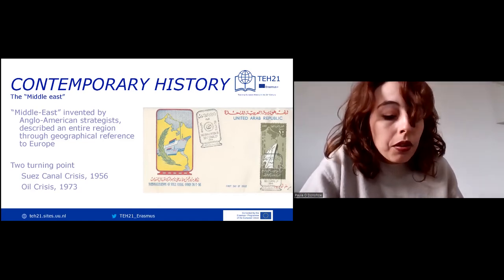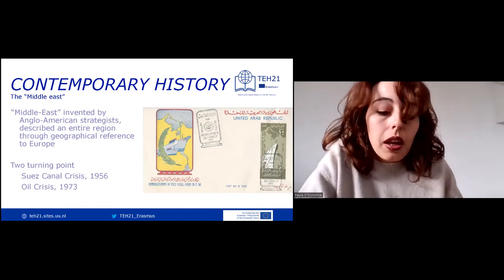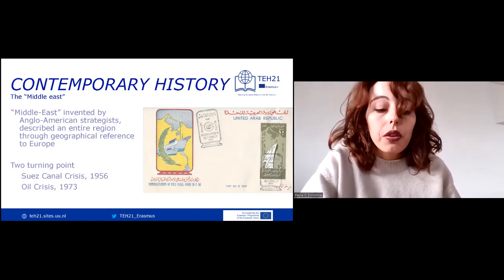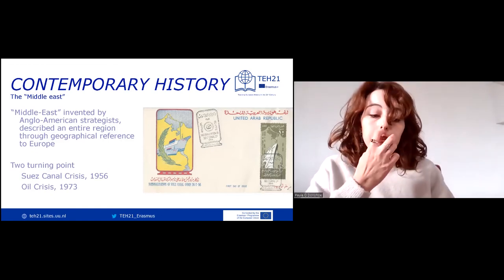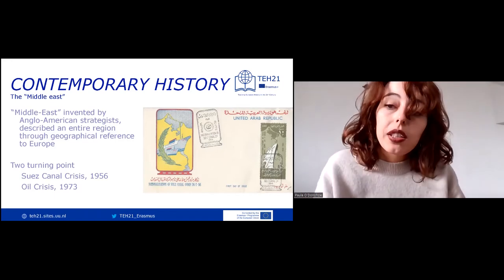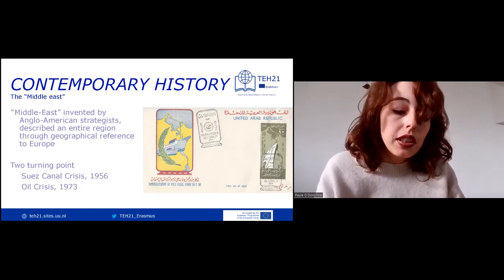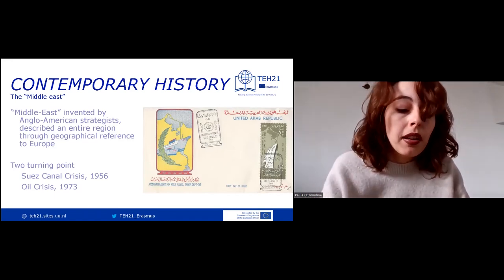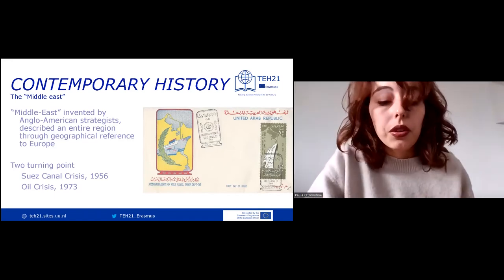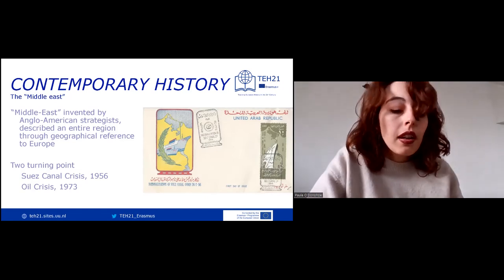Politically, culturally, and economically, it also helped identify Europe through a process of othering, which superficially associated the West with progress, civilization, and development, and the East with the binary opposite of those categories.